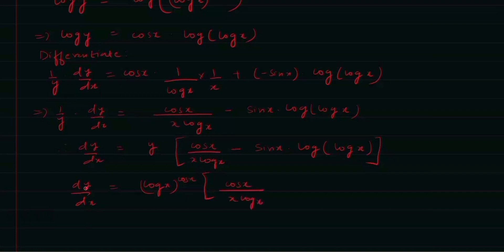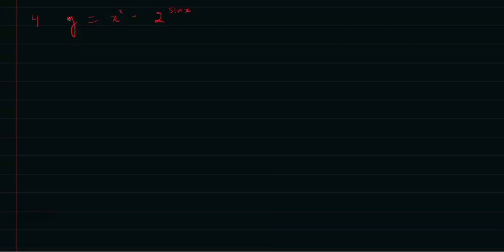Now we solve question number 4: y = x^x − 2^(sin x). This implies dy/dx = du/dx − dv/dx. First we find du/dx, where u = x^x. We take log on both sides.